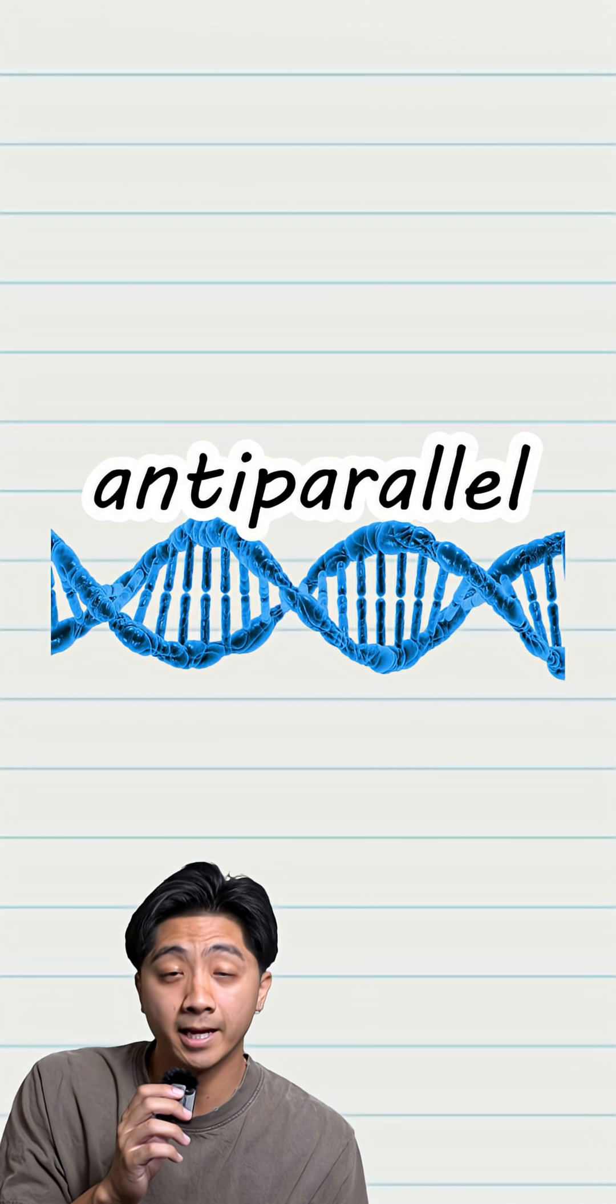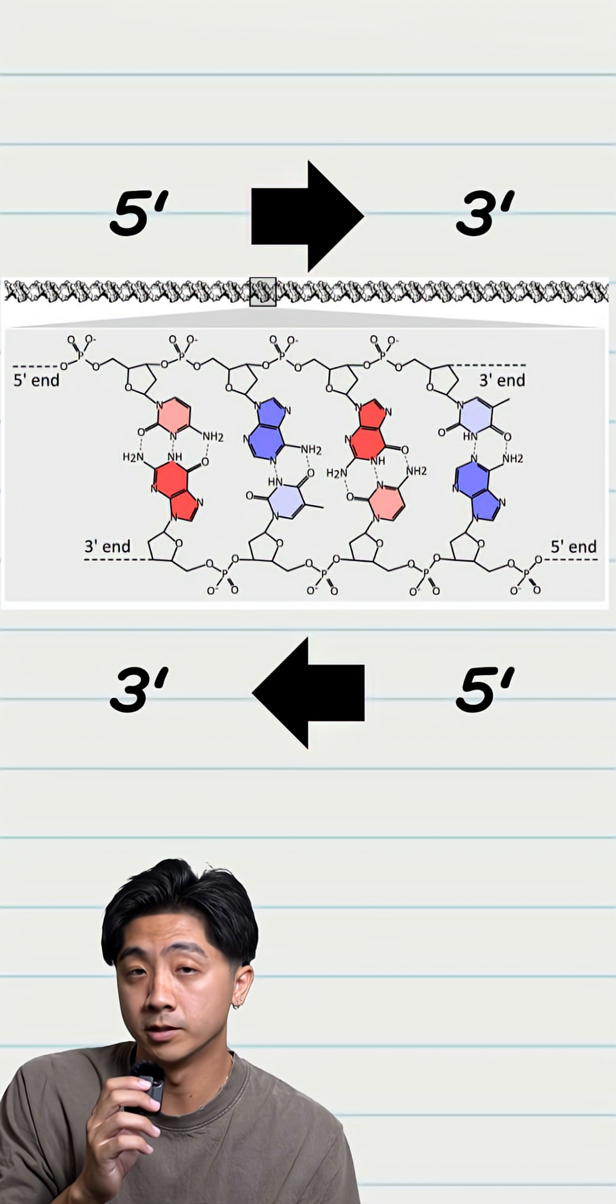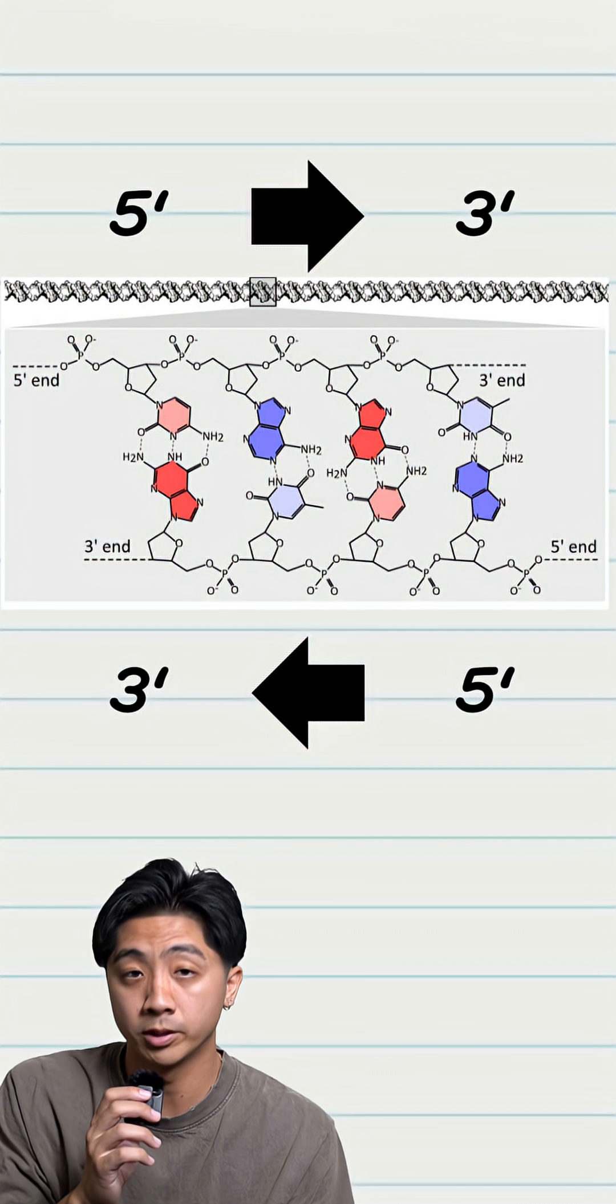DNA's structure is an anti-parallel double helix. Each strand runs in opposite 5' to 3' directions.